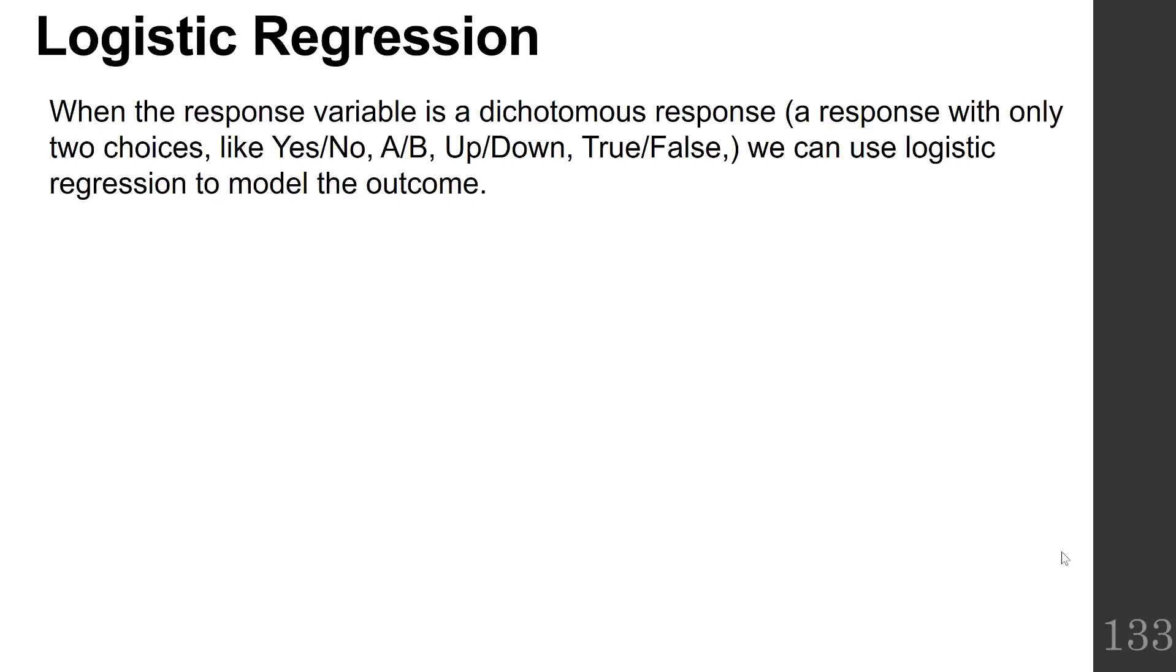Logistic regression is what you use when the response variable is a dichotomous response, a response with only two choices, like yes-no, a-b, up-down, true-false, etc.